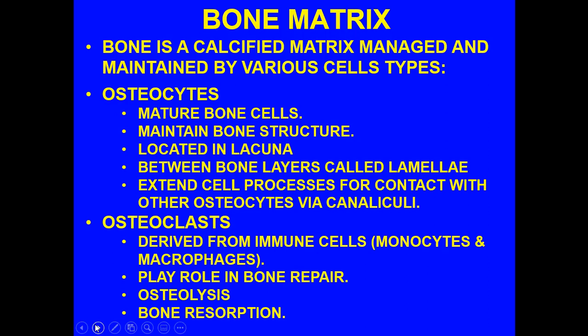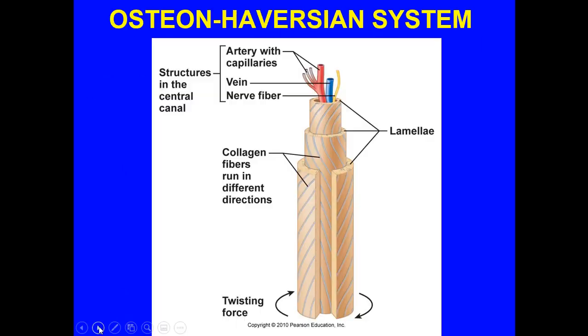Osteocytes are mature bone cells that maintain bone structure. They're located in the lacunae, in between bone layers called the lamellae, all part of the osteons. Osteocytes extend cellular processes for contact with other osteocytes via very fine lines called the canaliculi. Osteoclasts are derived from immune cells — monocytes and macrophages — and play a key role in bone repair. They're involved with osteolysis and bone resorption. They free up calcium ions and release enzymes to break down the collagen protein fibers that provide strength and resiliency in bone structure.